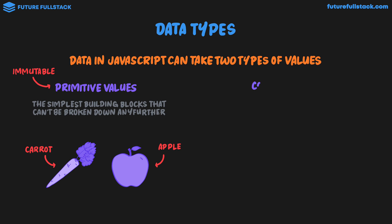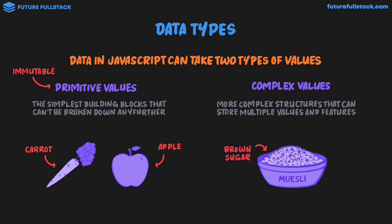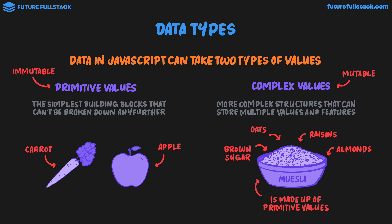The second type of value we have are complex values — more complex structures that can store multiple values and features. In our juice bar analogy, think of muesli, which contains multiple ingredients: brown sugar, oats, raisins, and almonds. Muesli is made up of primitive values. In chemistry, it's like a mixture — like the air we breathe, containing nitrogen, oxygen, and other gases. A fancy word in JavaScript for complex values is mutable — that is, they can change. For example, we could add more food groups into the muesli, like dried pineapple.